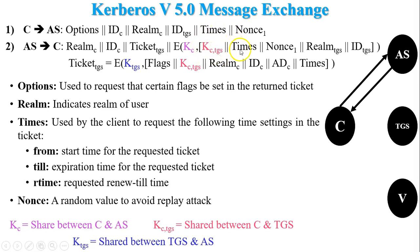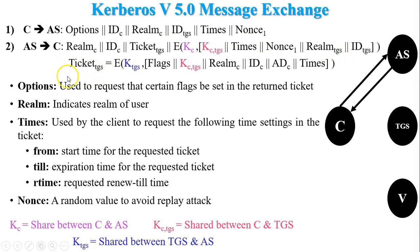The remaining fields are times, nonce, and IDTGS, which were sent by the client to the authentication server. One additional field is the realm of TGS, included by the authentication server. So after the second step, the client gets two important things: the first one is Ticket-TGS, and the second one is the session key between the client and the ticket granting server, KC-TGS.